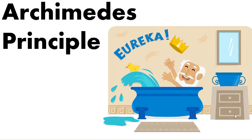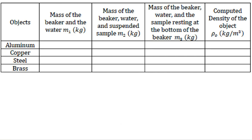This whole idea is all about Archimedes' principle. For this experiment, we will find the density of aluminum, copper, steel, and brass, and we will compare it to a constant.